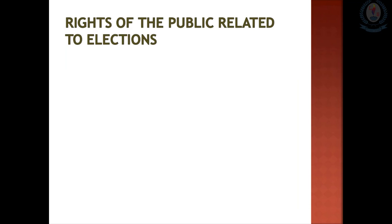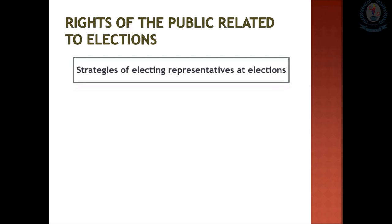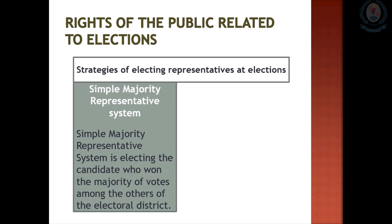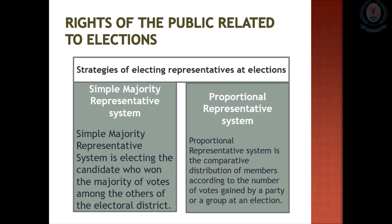Rights of the public related to elections: elections are an opportunity for people to participate in governance. There are two strategies of electing representatives at elections. The first is the simple majority representative system — electing candidates who win the majority of votes in an electoral district. The second is the proportional representative system — comparative distribution of members according to the number of votes gained by a party or group.